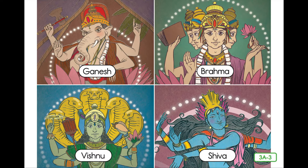Of all of the gods and goddesses that represent Brahman, the three most important gods are known as Brahma, Vishnu, and Shiva. Another important Hindu god shown in this image is Ganesh.